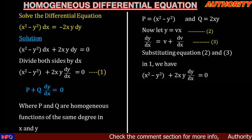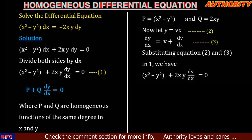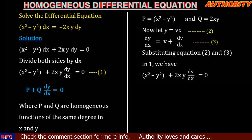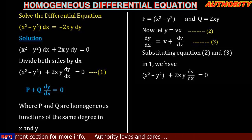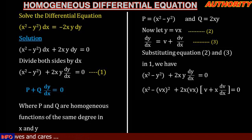Going back to equation 1 — x squared minus y squared plus 2xy dy/dx equal to zero — we substitute equations 2 and 3. Anywhere we see y we replace it with vx, and in place of dy/dx we replace it with v plus x dv/dx. So we get: x squared minus (vx) squared plus 2x(vx)(v plus x dv/dx) equal to zero.